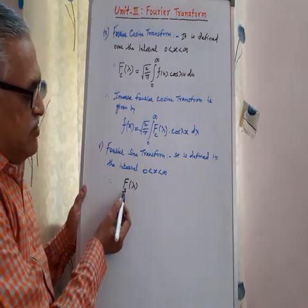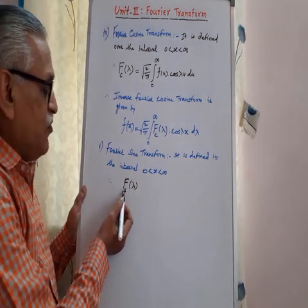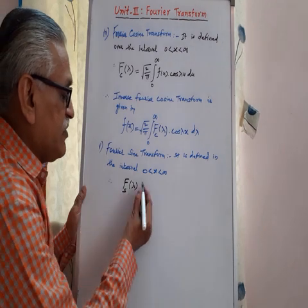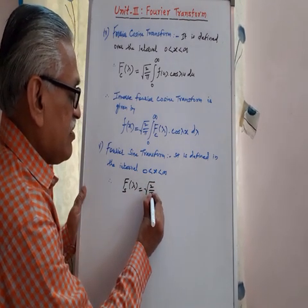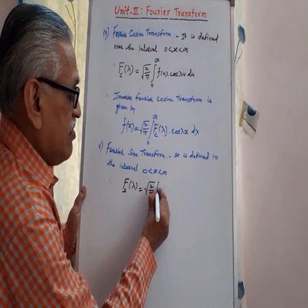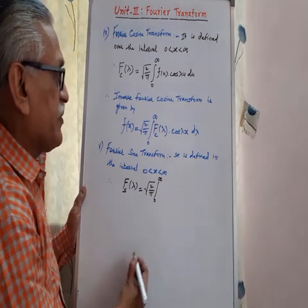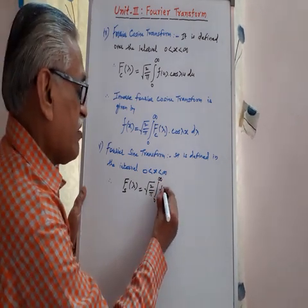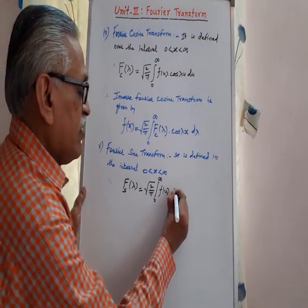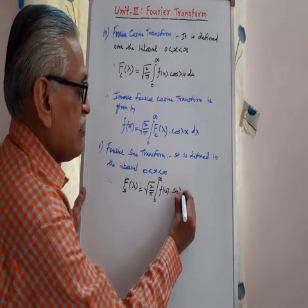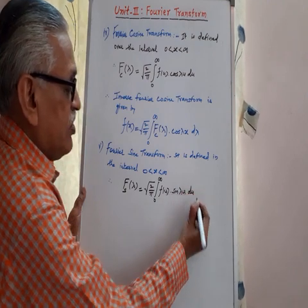Fs lambda, where the suffix 's' stands for sine transform. Therefore, the Fourier sine transform is given by: root 2 by pi, integral from 0 to infinity, of f of u into sine lambda u, du.